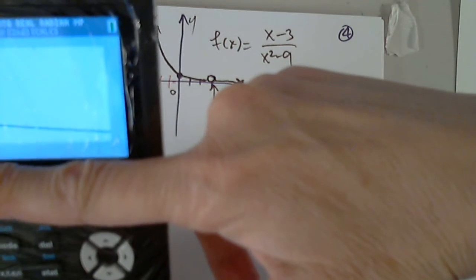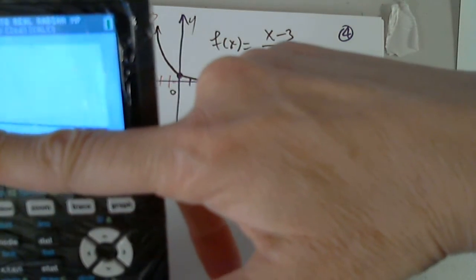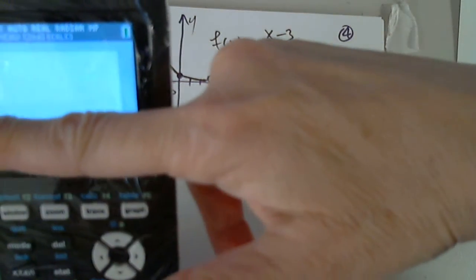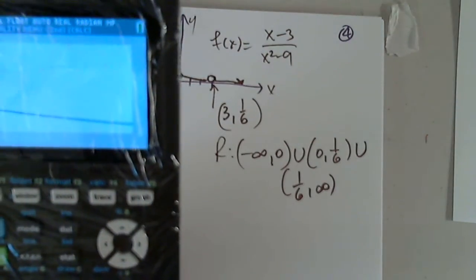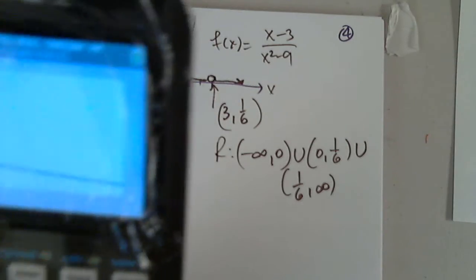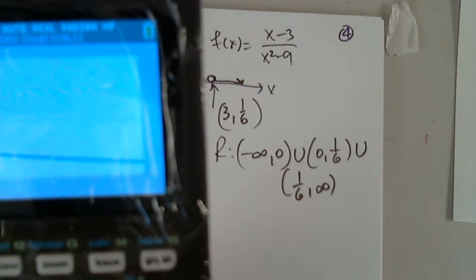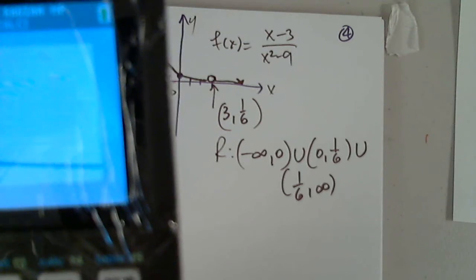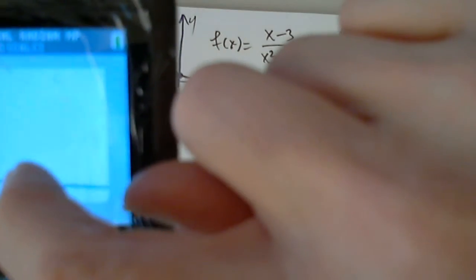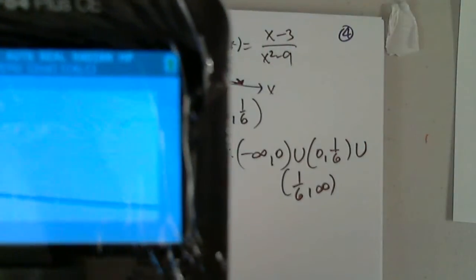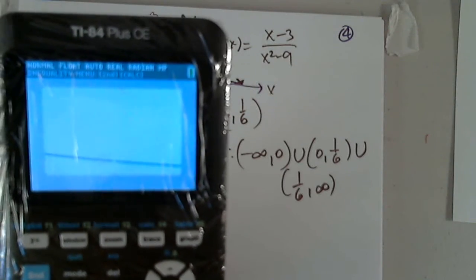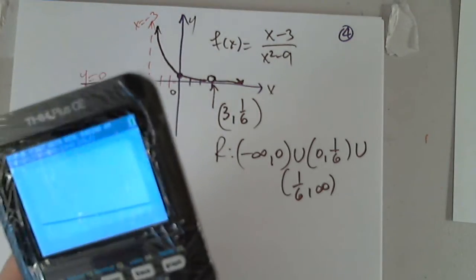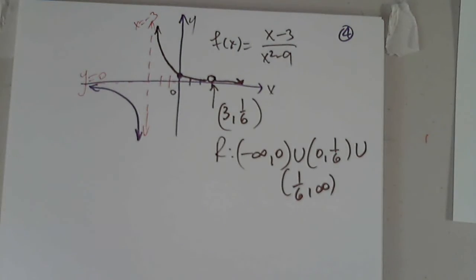So, the function exists from 0 to 1 over 6. There is a hole and then from 1 over 6 to infinity. Does everyone see the hole in the graph? Let's see it. It's right here at 3. But see how many times I had to zoom in or change the viewing window? The calculator is not as smart as you are.